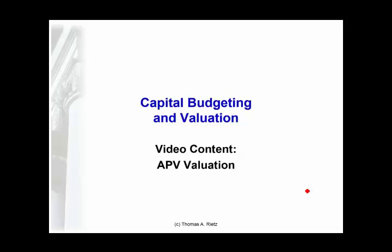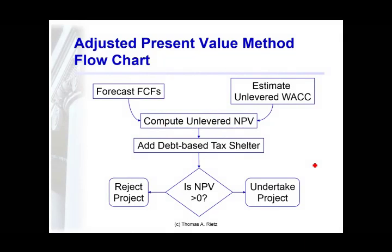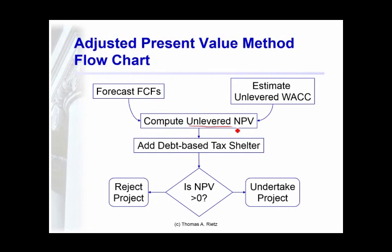This video discusses valuing a project by a method called adjusted present value. Adjusted present value accounts for the tax shelter of debt differently from weighted average cost of capital. Here we value the cash flows independent of financing and compute what's called the unlevered present value, and we separately value the tax shield associated with the project's debt.